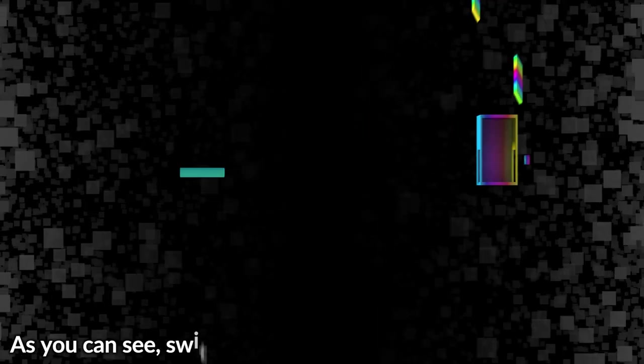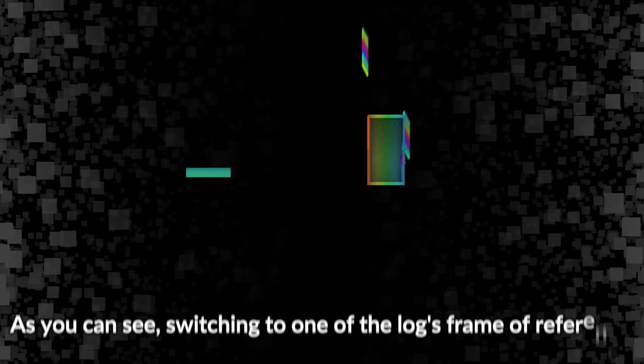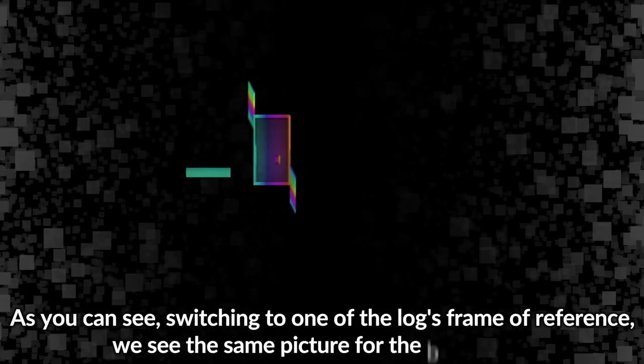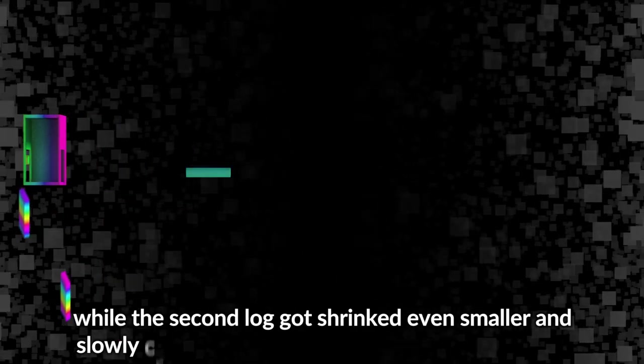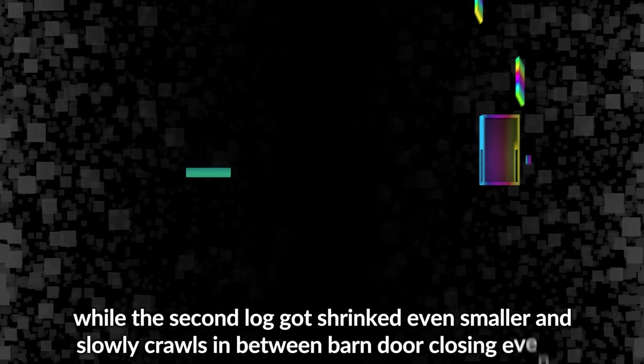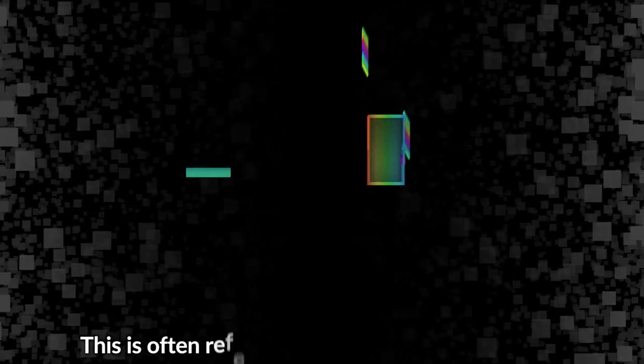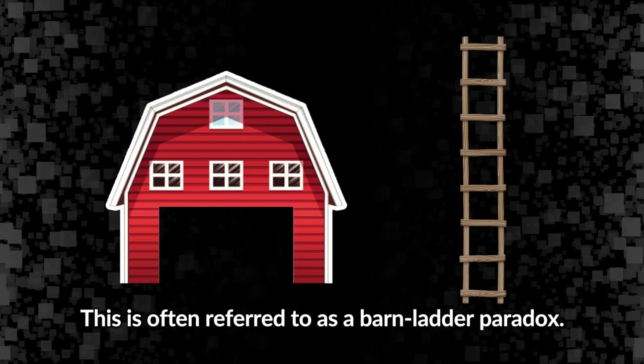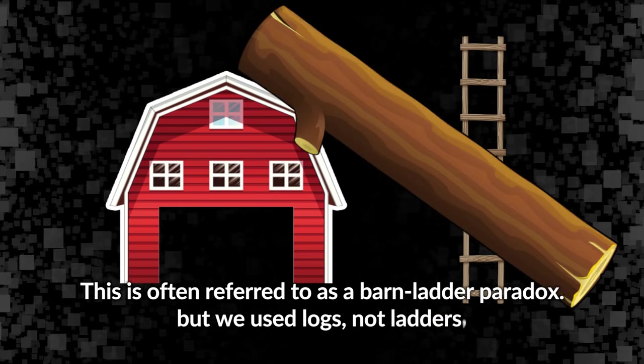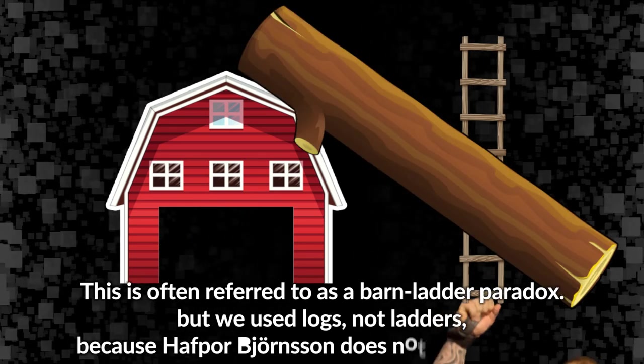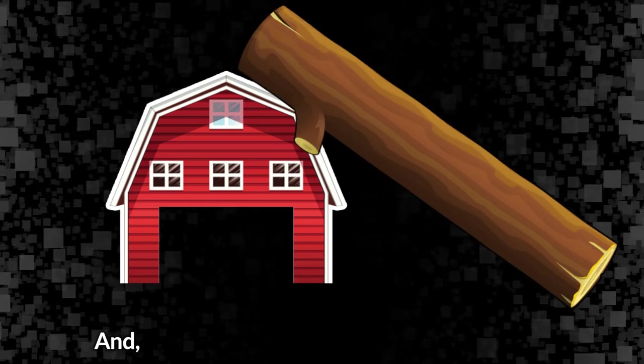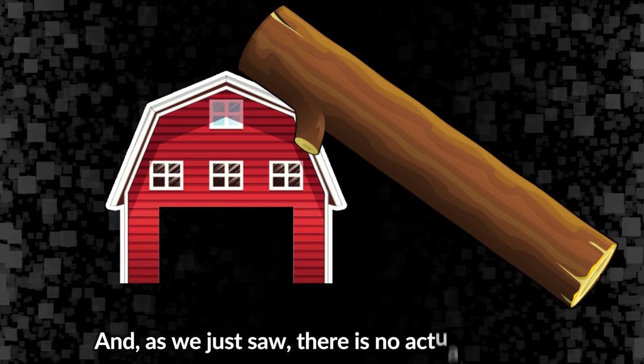Let's look at a more symmetric version of the problem with two logs flying from both directions meeting inside. As you can see, switching to one of the log's frame of reference, we see the same picture for the barn doors, while the second log got shrinked even smaller and slowly crawls in between barn and door closing events. This is often referred to as a barn-ladder paradox, but we used logs not ladders because Hofferburensen does not throw ladders. And as we just saw, there is no actual paradox.